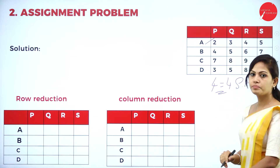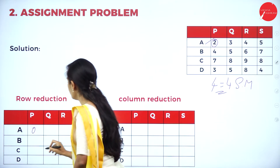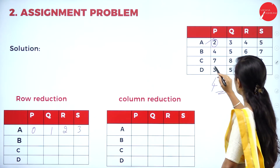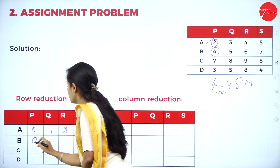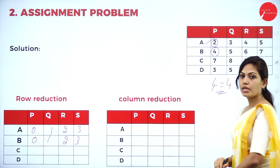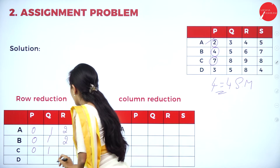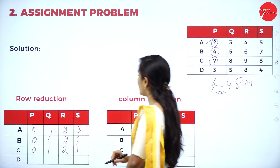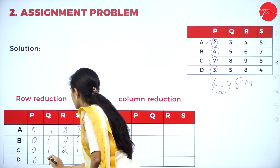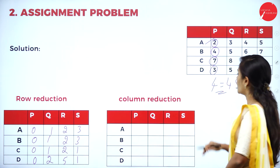Take the first row: the least value is 2. So 2 minus 2 is 0; 4 minus 2 is 2; 5 minus 2 is 3. Second row: least value is 4, giving 0, 1, 2, 3. Third row: least value is 7, giving 0, 1, 2, 1. Fourth row: least value is 3, giving 0, 2, 5, 1. Row reduction is now complete.